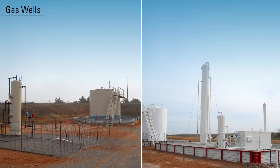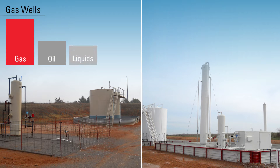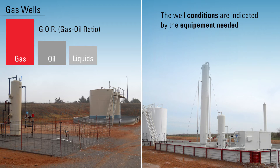Both of these locations are considered to be gas wells, meaning there is a higher ratio of gas produced compared to the amount of oil or liquids produced. This ratio is referred to as the GOR, or gas oil ratio. The well conditions are very different, as indicated by the equipment that is needed to make up the tank battery.